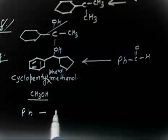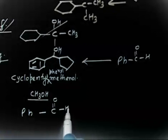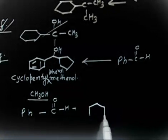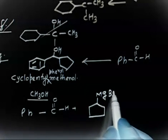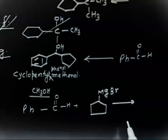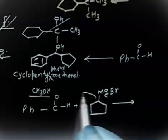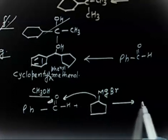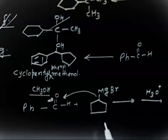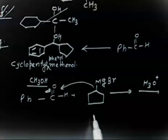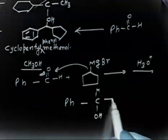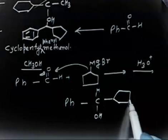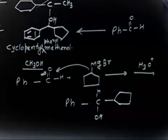Treat PhCHO with cyclopentyl–MgBr. The carbanion attacks the carbonyl carbon; the alkoxide opens up. After hydrolysis, you get PhCH(OH)–cyclopentyl, which is the desired cyclopentyl phenylmethanol.